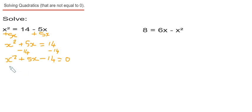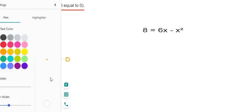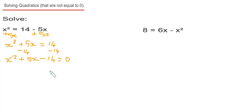Also note that you always need to have the x squared first and the number at the end. Once you've done this, you just need to put this into double brackets. So we're looking for two numbers that multiply to give us minus 14 and add to give us 5.